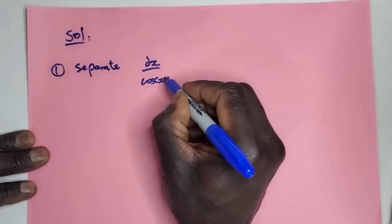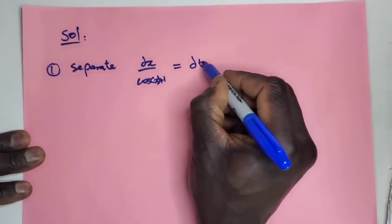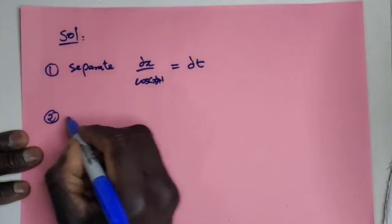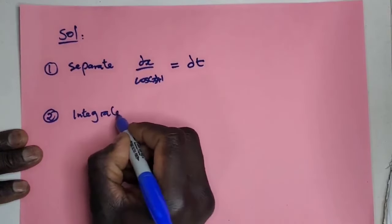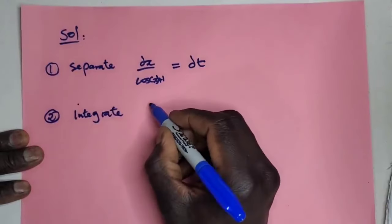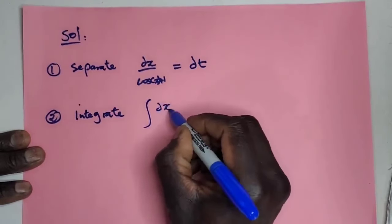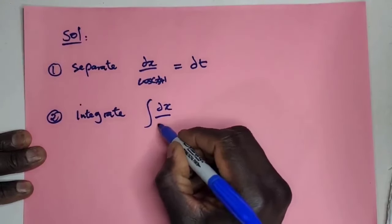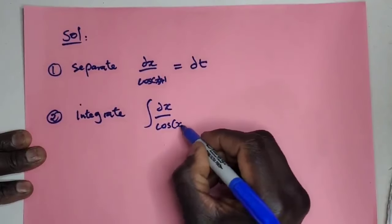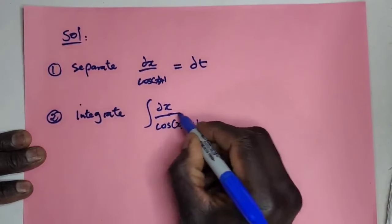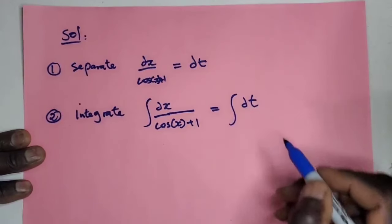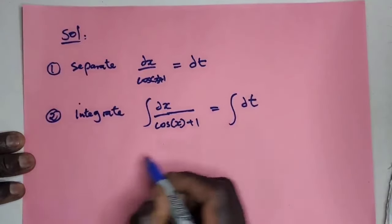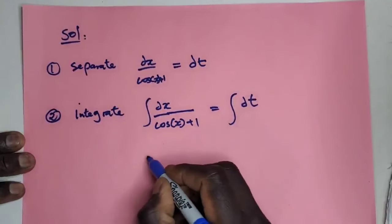Number 2, integrate. That is integral of dx/(cos x + 1) equals integral of dt. So this one will give you...